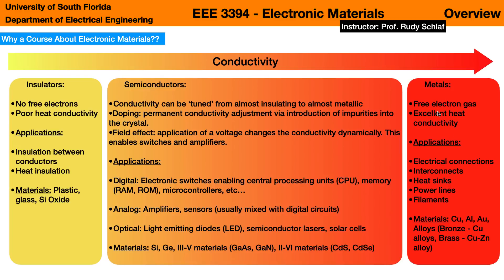At the other end of the conductivity range are metals. Metals have a free electron gas — many electrons that can move freely throughout the material — and that is the foundation for the high conductivity of metals. With that comes along also an excellent heat conductivity. Applications include making electrical connections (called interconnects) between transistors on integrated circuits, heat sinks to get heat out of devices, power lines, and filaments where we need conductivity and resilience to heat.